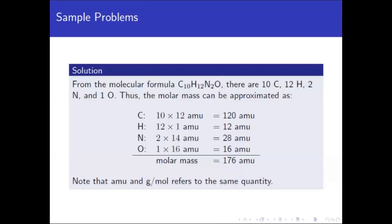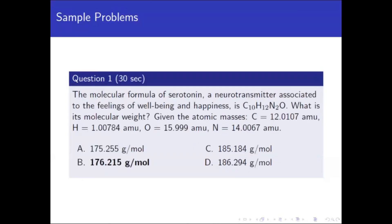You add all the masses together. The sum would be 176 AMU. Note that AMU and grams per mole refer to the same quantity — they are both molar masses or molecular weights. So the answer is 176 — letter B, 176.215.